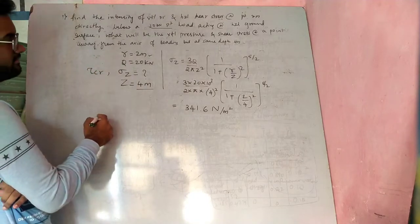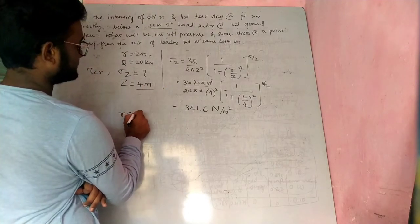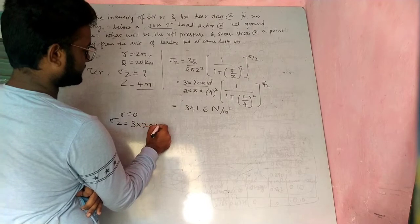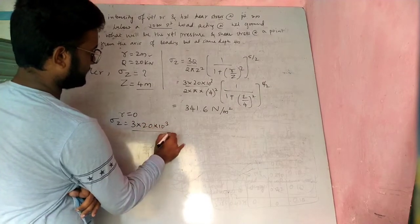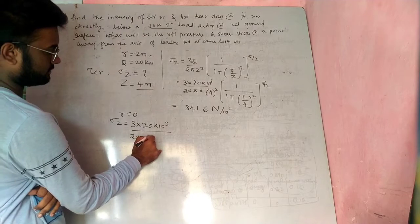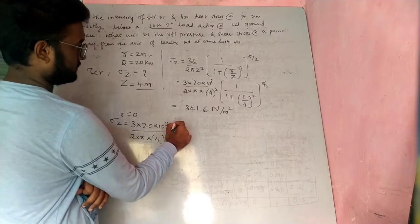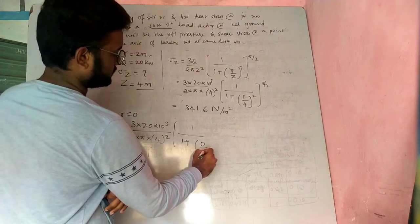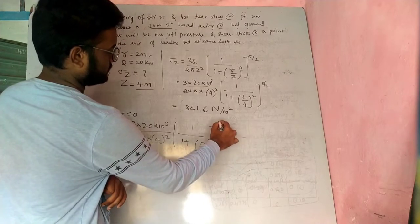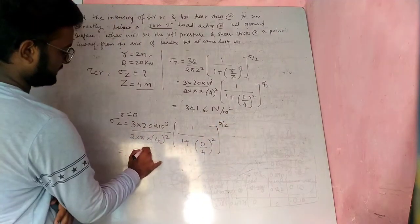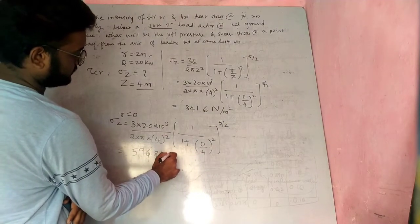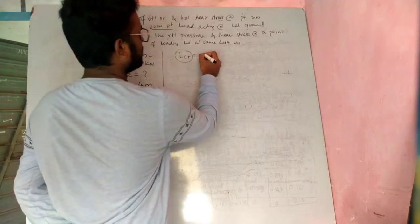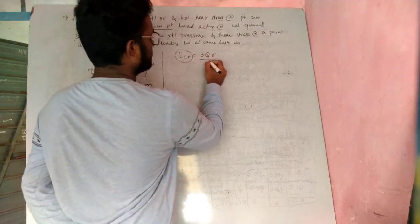When the load acts exactly at the horizontal ground surface, r is equal to 0. Substituting r=0, σz equals 3 × 20 × 10³ divided by 2π × 4² multiplied by 1 divided by (1 plus 0/4)² to the power 5/2, giving σz equal to 596.83 N/m².